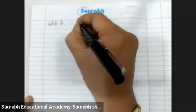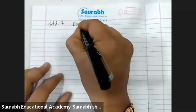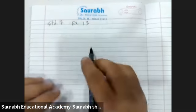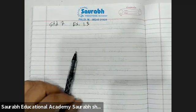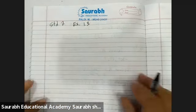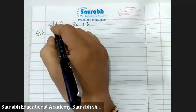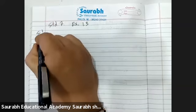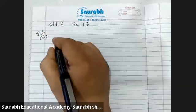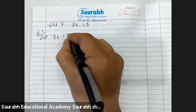Standard 7, Exercise 1.3, Sum number 1. Find each of the following products. A: 3 into minus 1.